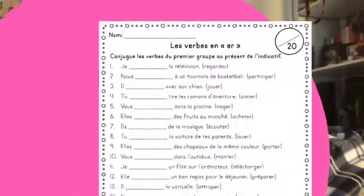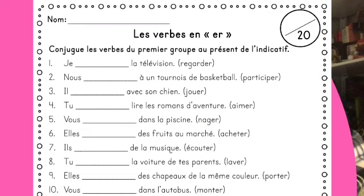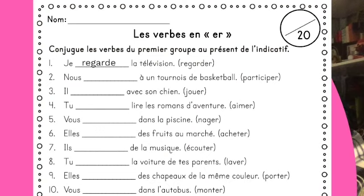Maintenant, on y va. Les verbes en E : conjuguez les verbes du premier groupe au présent de l'indicatif. Numéro 1 : je regarde la télévision — pour regarder avec je, il faut E à la fin, donc regarde. Nous participons à un tournoi de basketball — participons (O-N-S). Il joue avec son chien — pour jouer avec il, il faut E à la fin, il joue avec son chien.